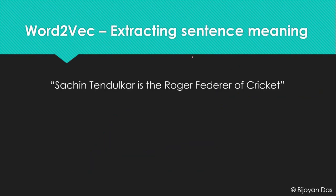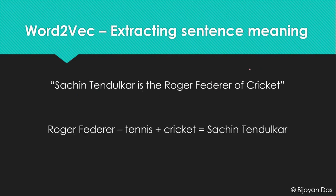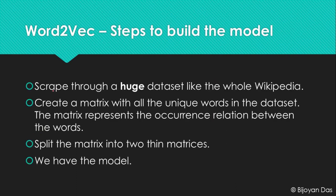Here's another example: Sachin Tendulkar is the Roger Federer of cricket. Sachin Tendulkar is a great player of cricket and Roger Federer is a great player of tennis. So if you write 'Roger Federer minus tennis plus cricket,' you should get Sachin Tendulkar. This is the kind of semantic information that Word2Vec stores, and it's remarkable how much relational knowledge is captured.